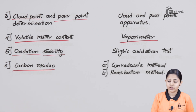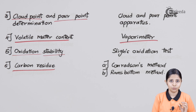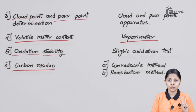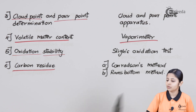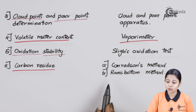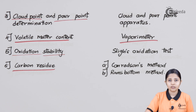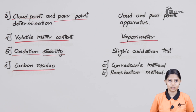Finally, among the physical properties, we have carbon residue — the unused or unwanted carbon present in the lubricants or grease. It can be determined by two methods: Conradson's method and Ramsbottom's method. Both methods are equally useful for finding the carbon residue.